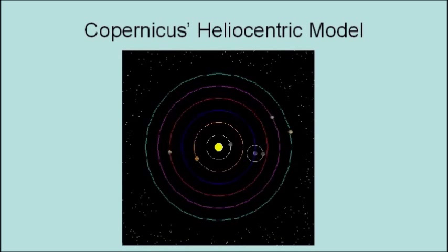Note that there are only five planets. That is because Mercury, Venus, Mars, Jupiter, and Saturn are the only planets that can be seen with the naked eye.